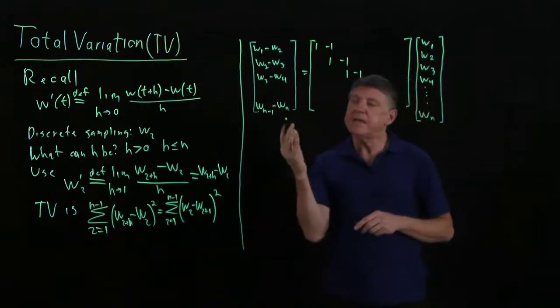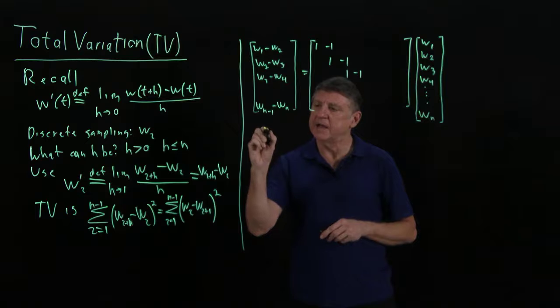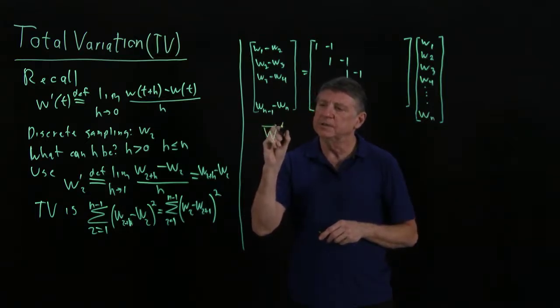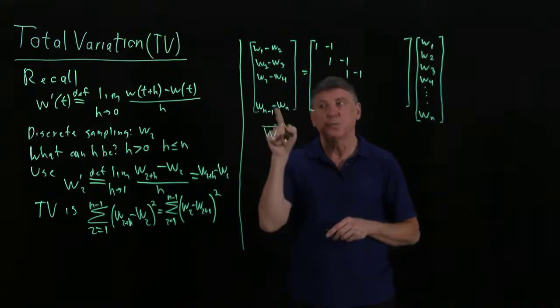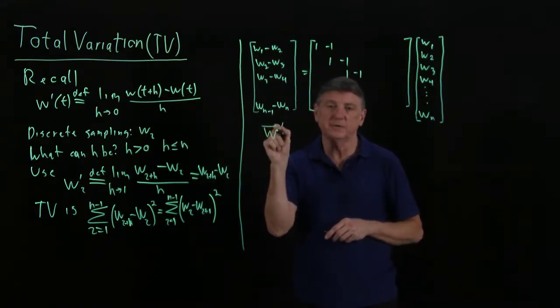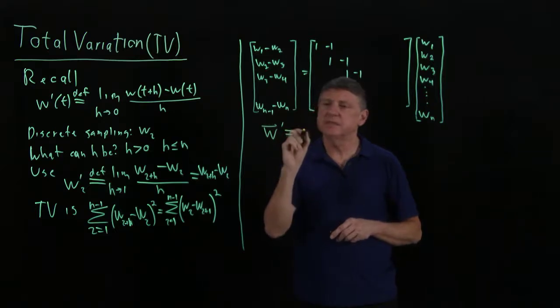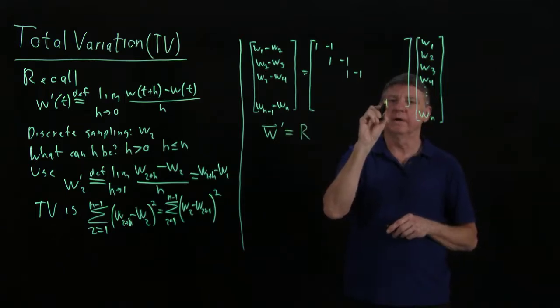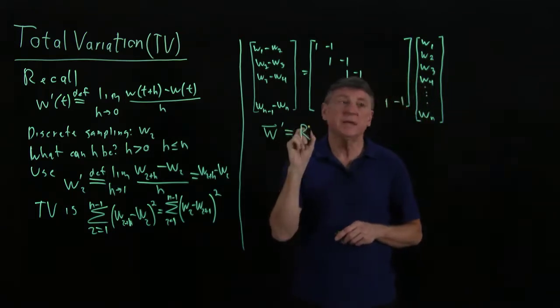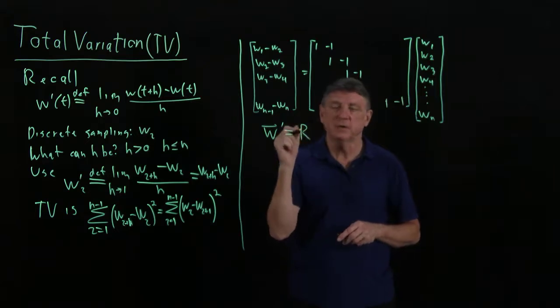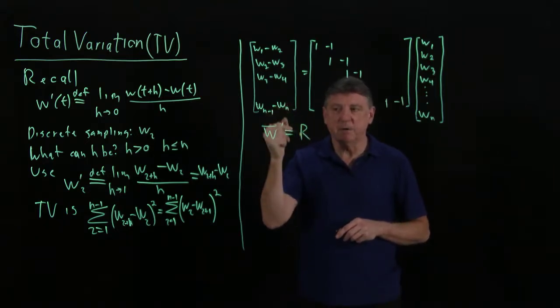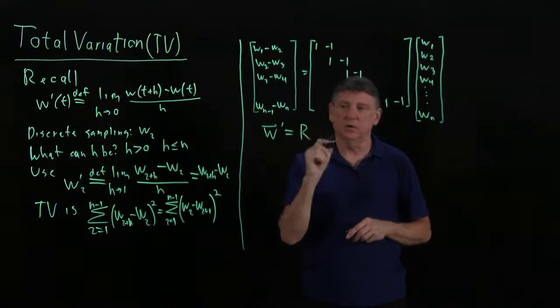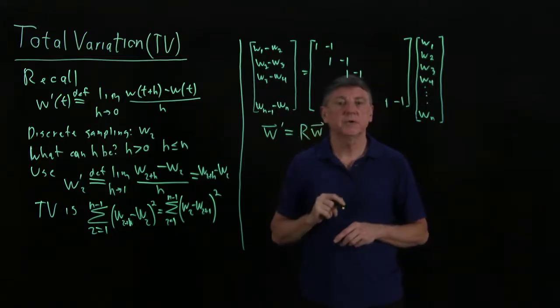So I can now write that as I can say that in the discrete form, the w vector differentiated has one fewer entries than the w. And that is, this is now an upper triangular matrix, n minus 1 rows and n columns times the w matrix.